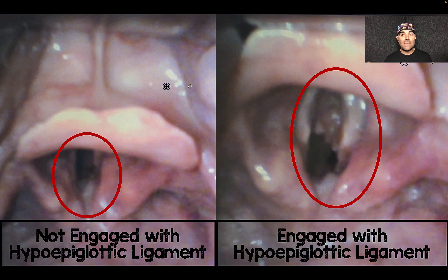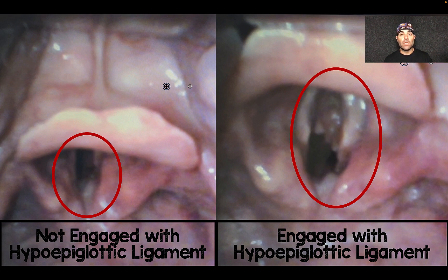This is one of the key micro skills in obtaining the best view of your airway — making sure that you're not just shoving that laryngoscope in, and not just getting into the vallecular, but you're actually engaging that hypoepiglottic ligament.